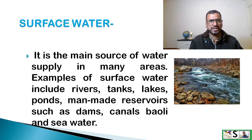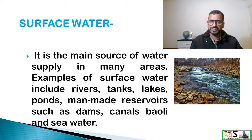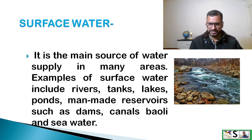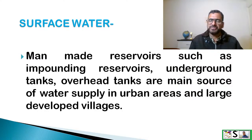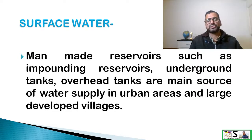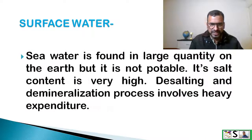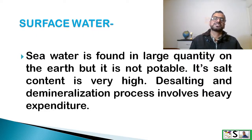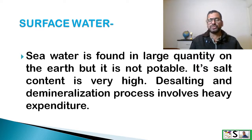Surface water is the main source of water supply in many areas. Examples of surface water include rivers, tanks, lakes, ponds, manmade reservoirs such as dams, canals, bawli and seawater. Manmade reservoirs such as impounding reservoirs, underground tanks and overhead tanks are the main source of water supply in urban areas and large developed villages. Sea water is found in large quantities on the earth but it is not potable — its salt content is very high, and the desalting and demineralizing process involves heavy expenditure.